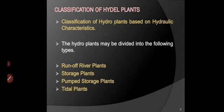The classification of hydro plants based on hydraulic characteristics includes: runoff river plant, storage plant, pumped storage plant, and tidal plant. Another classification is based on head.